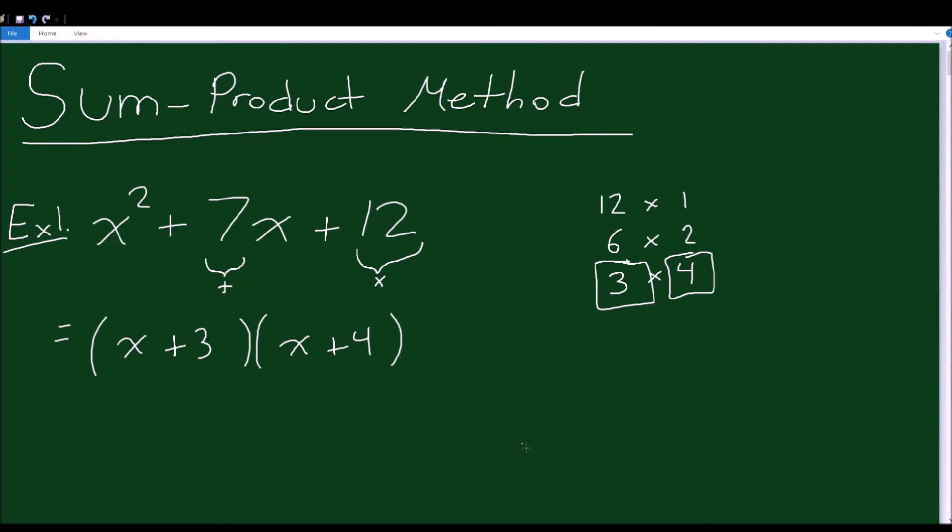Now, you might be saying that was too easy. Why does this work? Well, if you multiply this out, you'll see exactly why it works. x times x is x². So we already got the first term. That's why we write x and x. Now, what happens if I keep expanding this out?